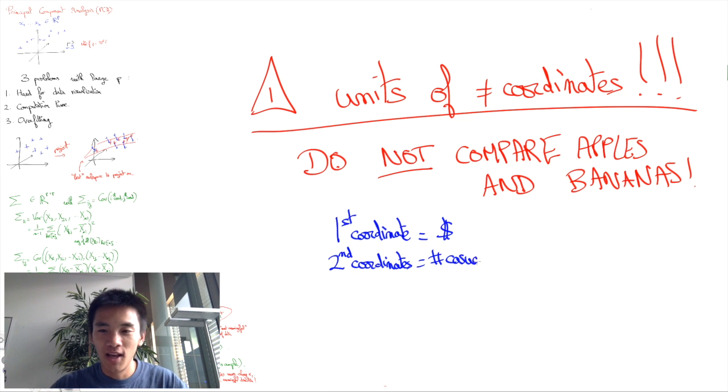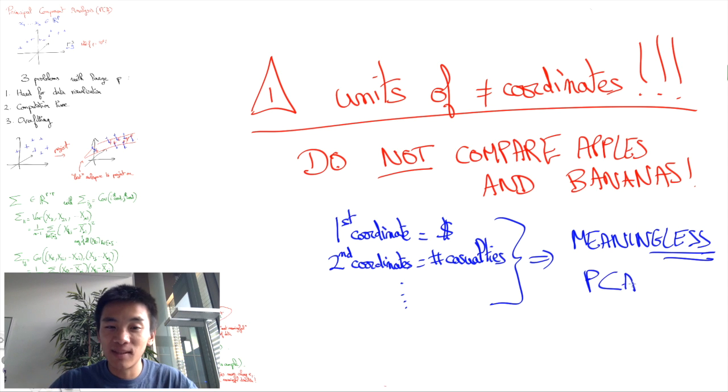You cannot have unrelated kinds of coordinates. If you use unrelated kinds of measures or units for the different coordinates, PCA is likely to give you meaningless results.